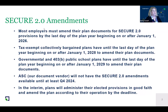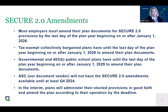I wanted to talk about SECURE 2.0. The first thing we're going to talk about is the timeline for our amendments that are going to be required. Most of our plans will be required to be amended by December 31st of 2026, except some of our tax-exempt and union plans which will have until the end of the 2028 plan year. Governmental and 403(b)s will have until the end of the 2029 plan year to amend their plans for the SECURE 2.0 provisions.